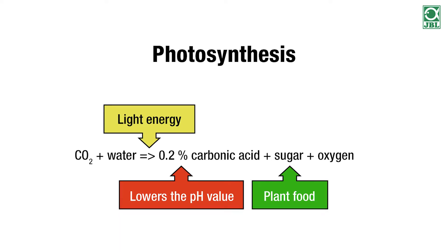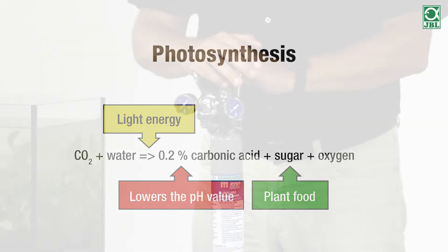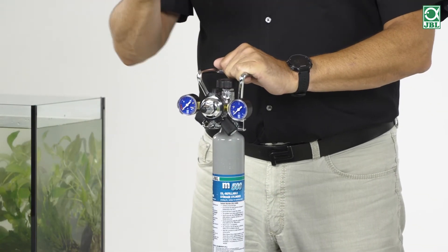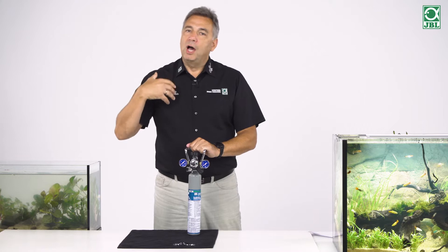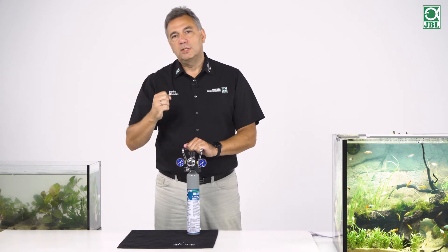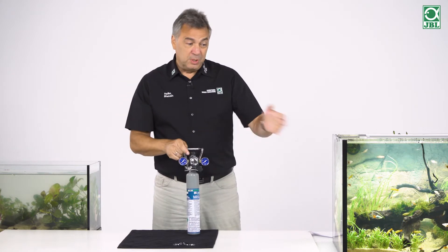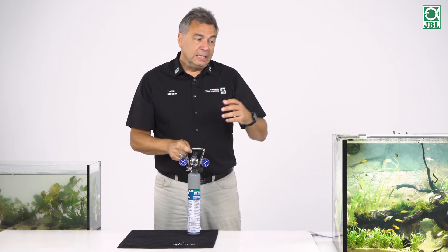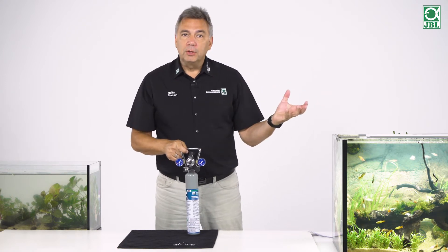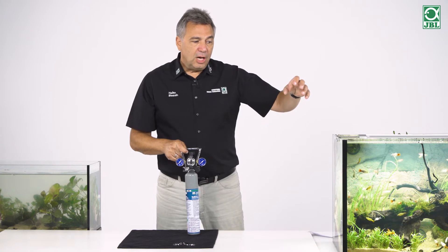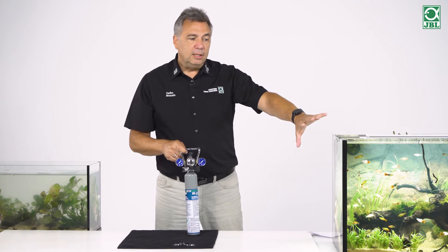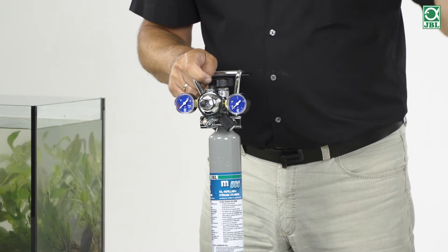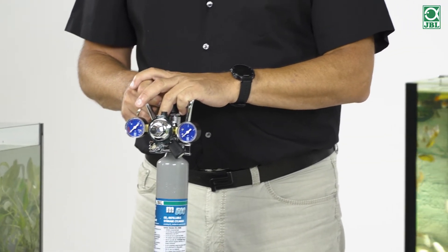This is how our planet works. Plants produce oxygen, and animal organisms such as human beings consume that oxygen — we breathe out CO2, and the plants absorb the CO2. In the aquarium, though, we do not have thousands of fish, which means we have less CO2 in the aquarium than the plants need. It is in precisely this case that the CO2 system helps us.